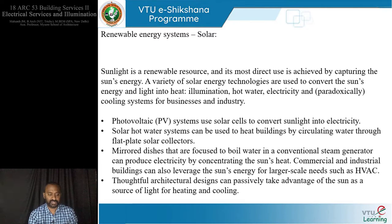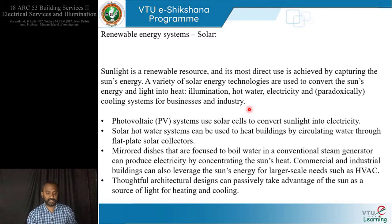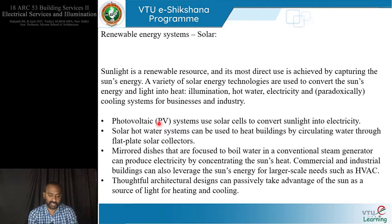Sunlight is a renewable source, and its most direct use is achieved by capturing the sun's energy. A variety of solar energy technologies are used to convert the sun's energy and light into heat, illumination, hot water, and electricity. Interestingly, these systems are also used for cooling in large businesses and industries. Photovoltaic systems use solar cells to tap energy, store it, and convert it into electricity — since it is DC, a solar inverter converts it to AC.